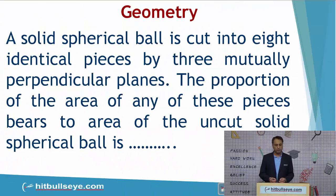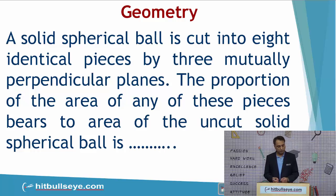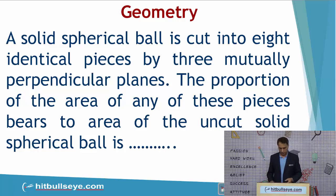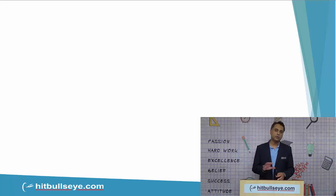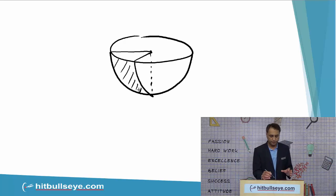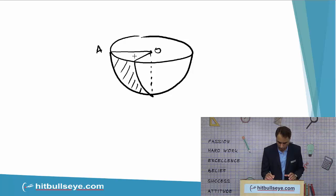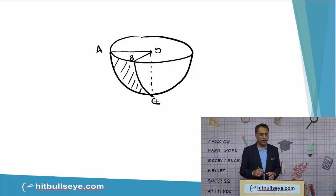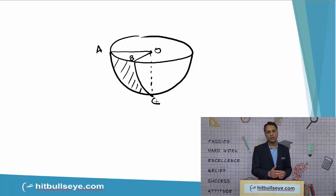A solid spherical ball is cut into eight identical pieces by three mutually perpendicular planes. The proportion of the area of any one of these pieces to the area of the uncut solid spherical ball is what? In this question, you have a sphere cut into quadrants through three mutually perpendicular — or orthogonal — planes. This is what it looks like: a section labeled A-O-B-C represents one quadrant which emerges when the sphere is cut in the described way, giving eight such quadrants.